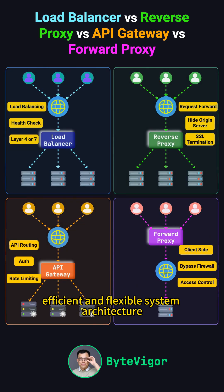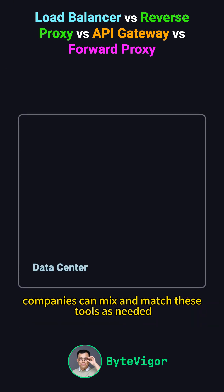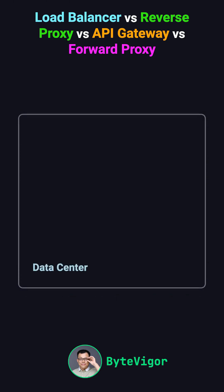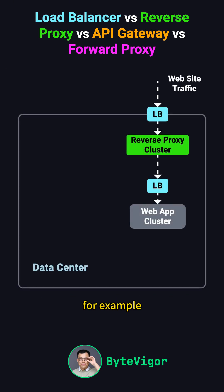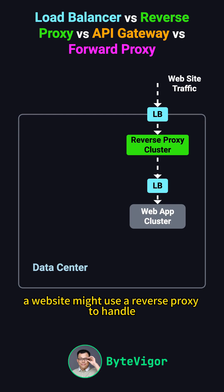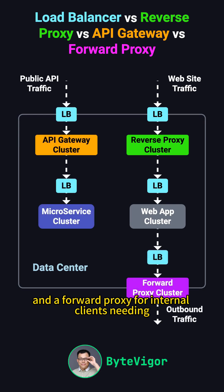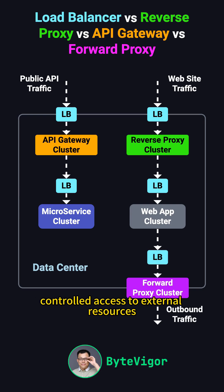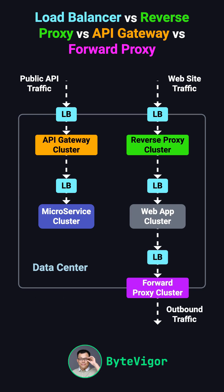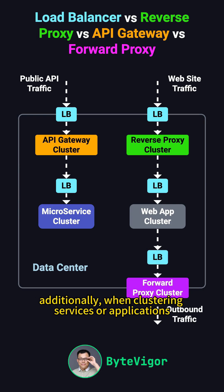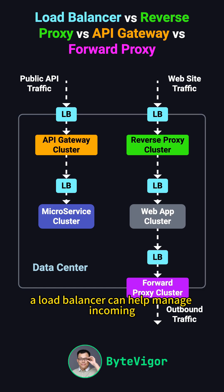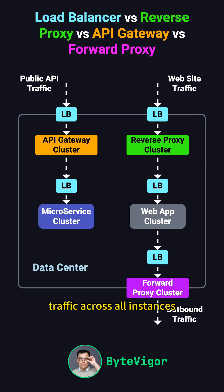To build a secure, efficient, and flexible system architecture, companies can mix and match these tools as needed. For example, a website might use a reverse proxy to handle user requests, an API gateway to manage public API traffic, and a forward proxy for internal clients needing controlled access to external resources. Additionally, when clustering services or applications, a load balancer can help manage incoming traffic across all instances.